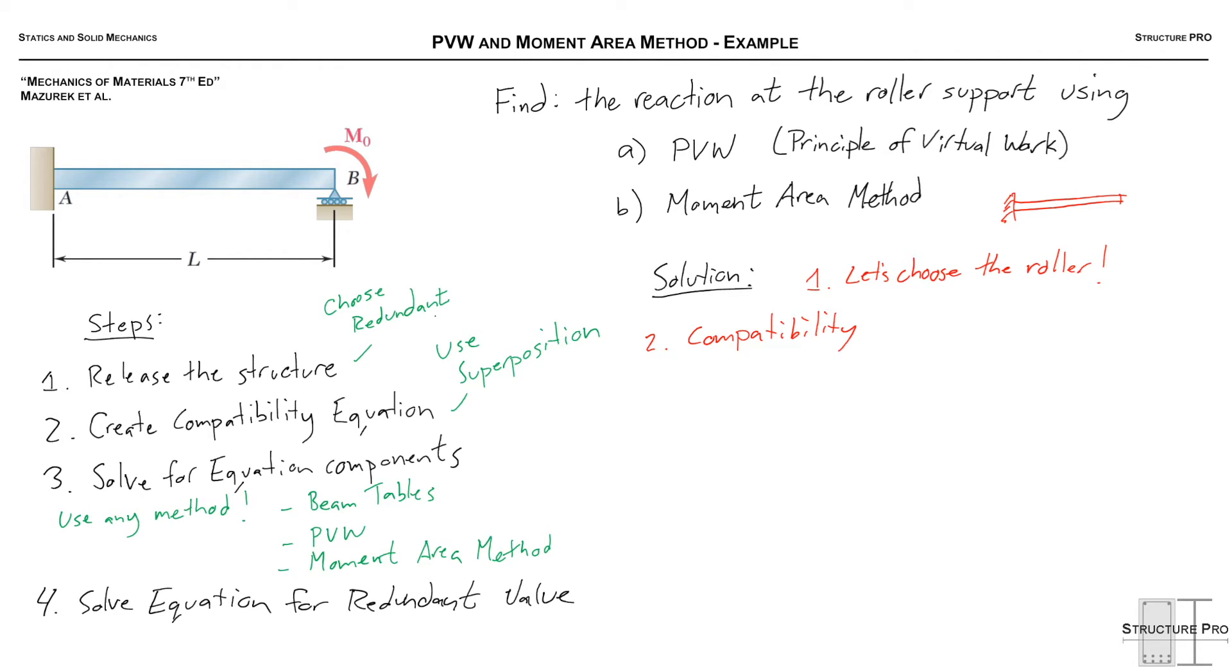So let's draw out what the structure would look like released with the real loads. Okay, and then we're going to add in the release structure with the redundant load, basically a unit load in the direction of the redundant that we removed. Okay, so here's the release structure with our real loads, the moment MO at the right side end B. And then here's our release structure with a load corresponding to our redundant. And together, when we add these up, we get our actual structure. But not quite, because we don't know the value of this redundant. So we're going to put in a value of 1, and we're going to multiply that whole system by x. And x will be that redundant value that we end up solving for.